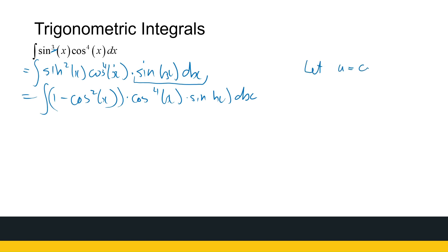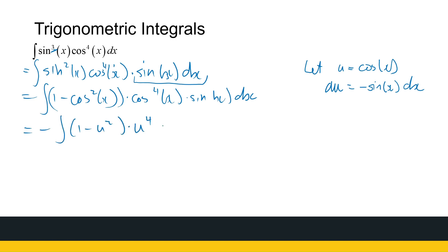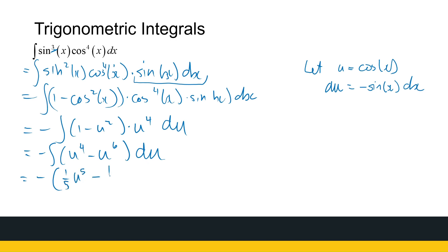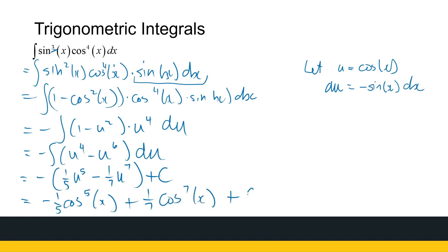We let u equal cos x, so du is minus sine x dx. That gives minus the integral of 1 minus u squared times u to the power 4 du, which is minus the integral of u to the power 4 minus u to the power 6 du. So that's minus 1 over 5 u to the power 5 minus 1 over 7 u to the power 7 plus c. Taking it back to x: minus 1 over 5 cos to the power 5x plus 1 over 7 cos to the power 7x plus c.